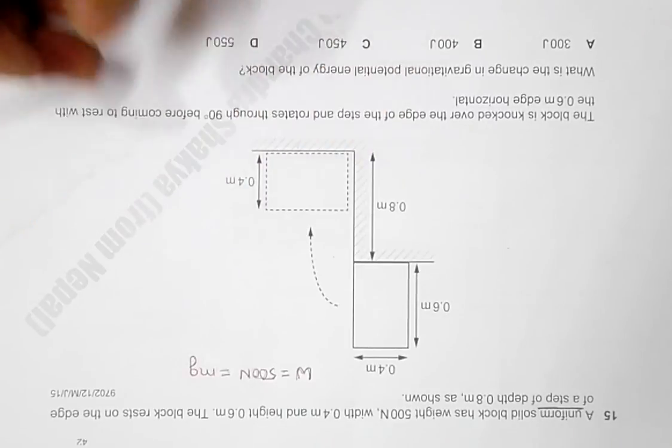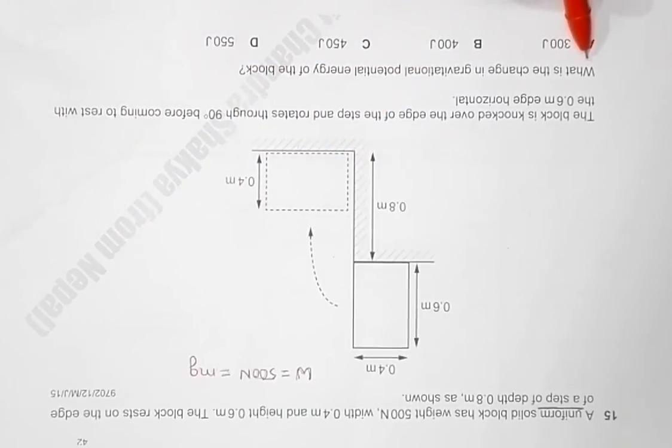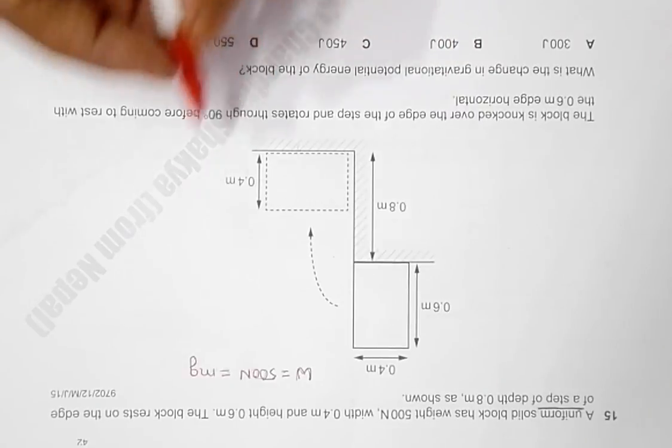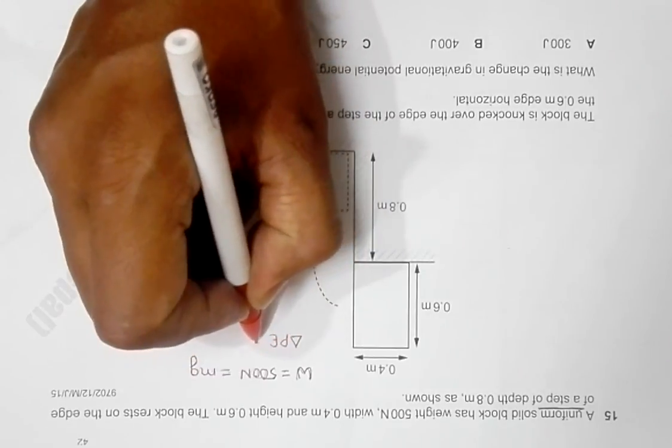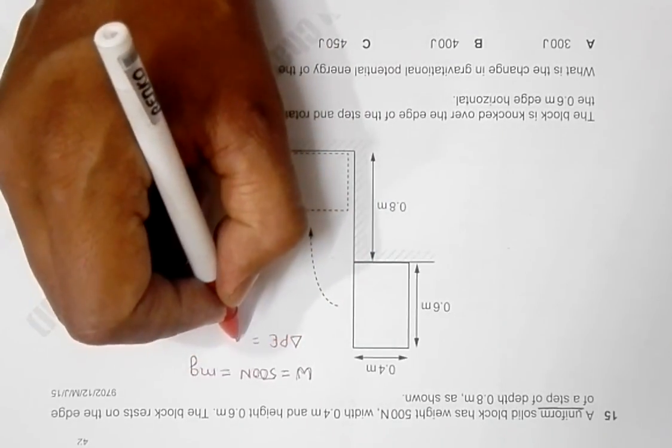We have to find what is the change in the gravitational potential energy of the block. The formula for this should be ΔPE equal to mg into ΔH, so we have to find the change in the height of the body when it falls and also rotates through 90 degrees.